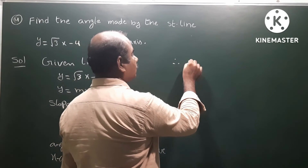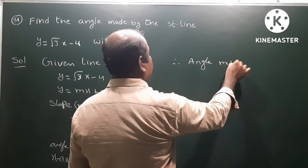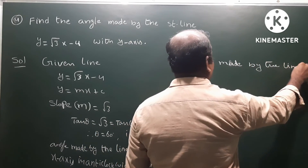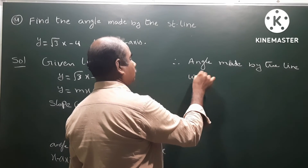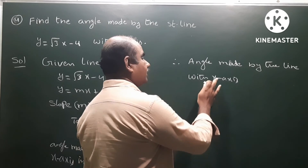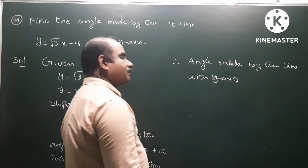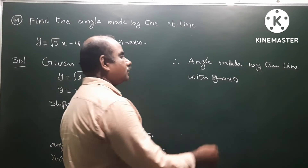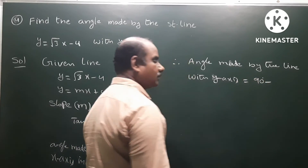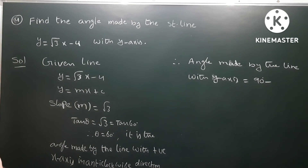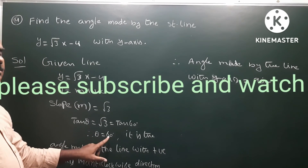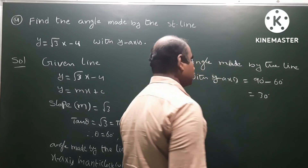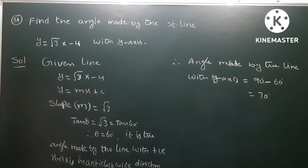Therefore, the angle made by the line with x-axis is 60 degrees. So the angle made by the straight line with the y-axis — okay.